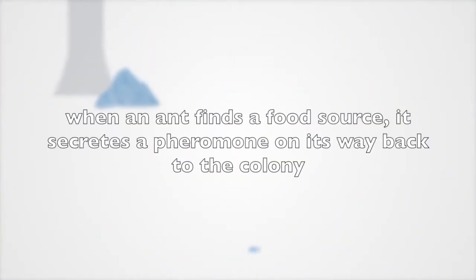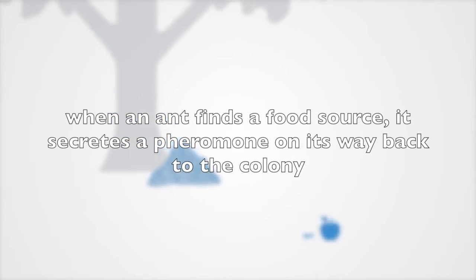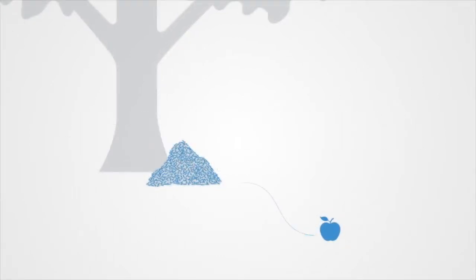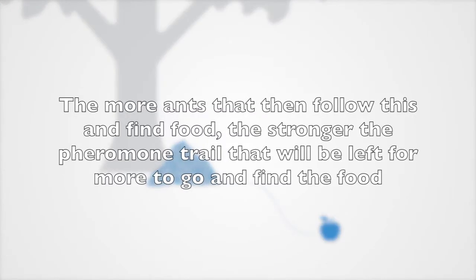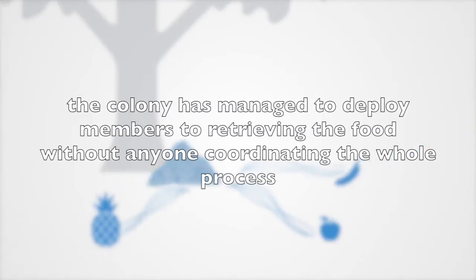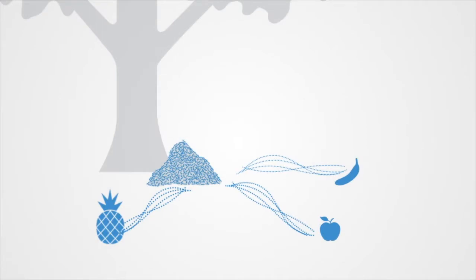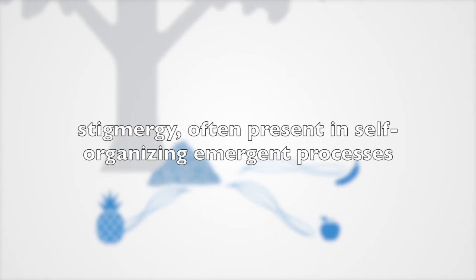For example, when an ant finds a food source it secretes a pheromone on its way back to the colony, thus communicating where the food source is. The more ants that follow this and find food, the stronger the pheromone trail that will be left for more ants to find the food. In such a way the colony has managed to deploy members to retrieving the food without anyone coordinating the whole process.